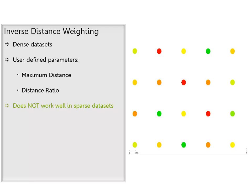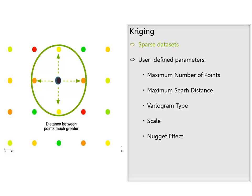While inverse distance weighting is good for dense datasets, it does not perform well for very sparse datasets, such as soil sampling results. For these types of datasets, where GPS points are few and typically further apart from each other, kriging is the preferred method. Kriging tends to provide a better approximation of the values that fall between the known data points, leaving you with a more accurate map.